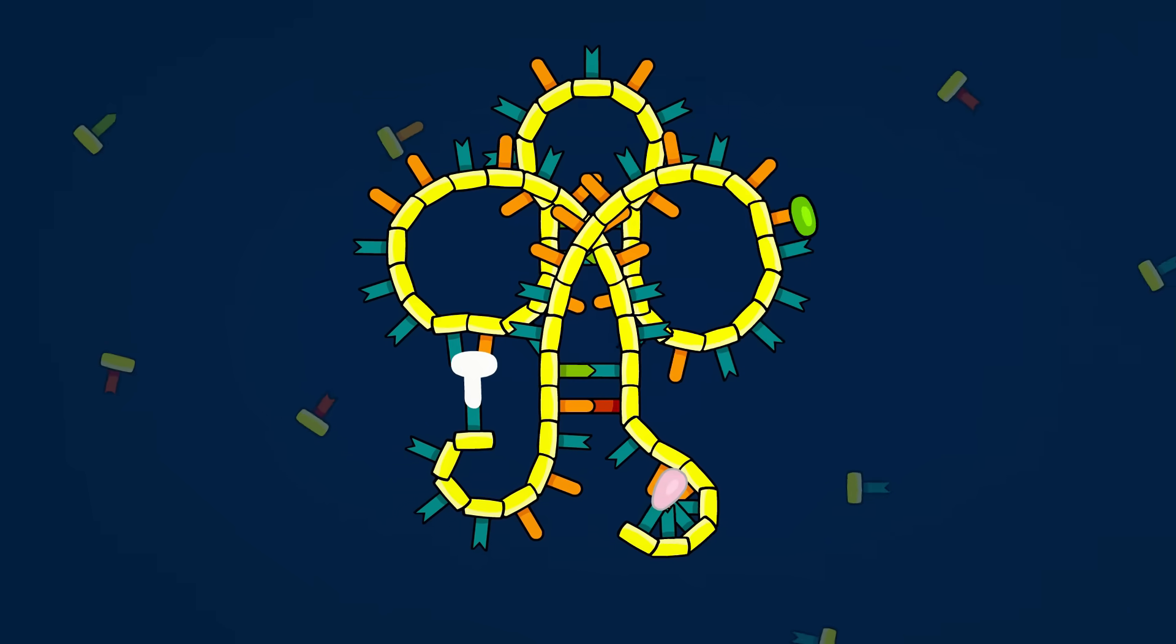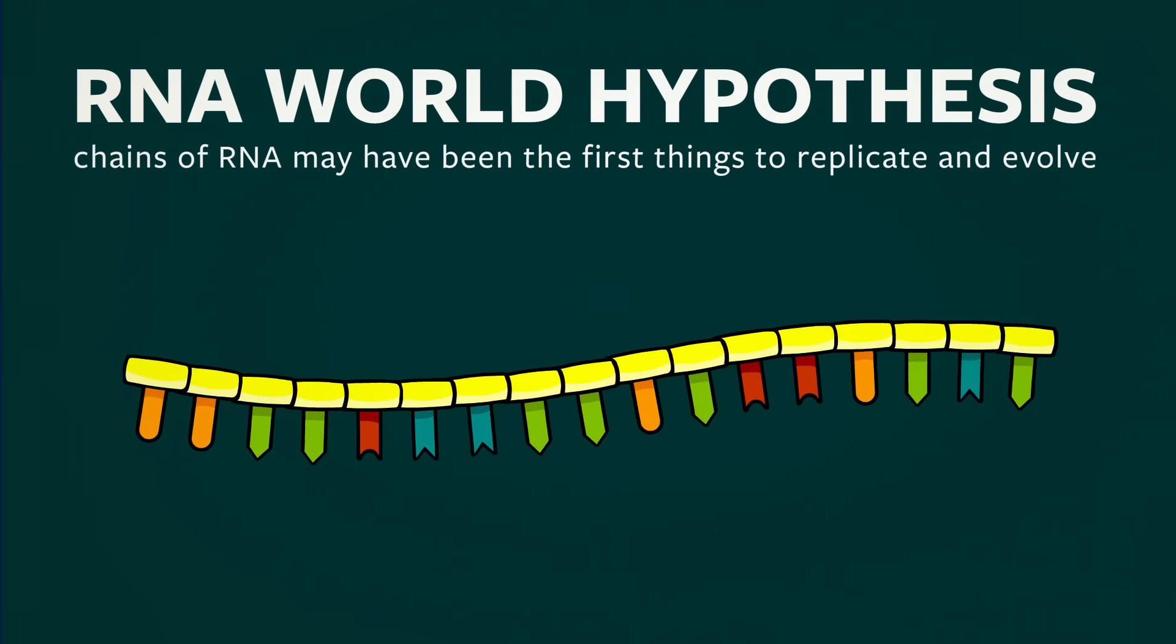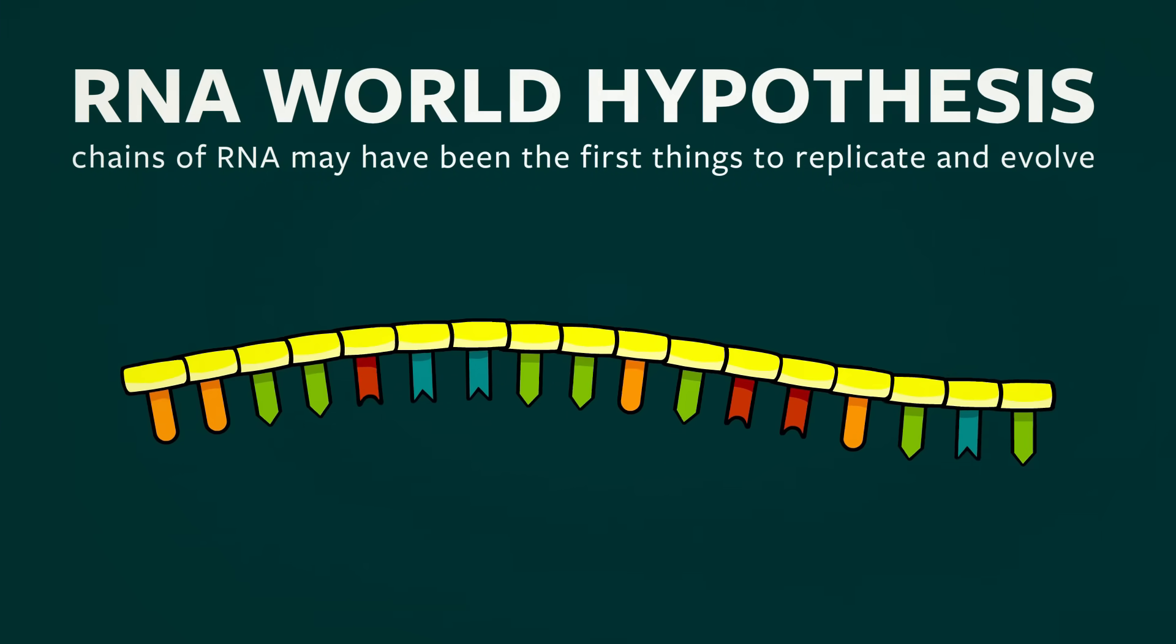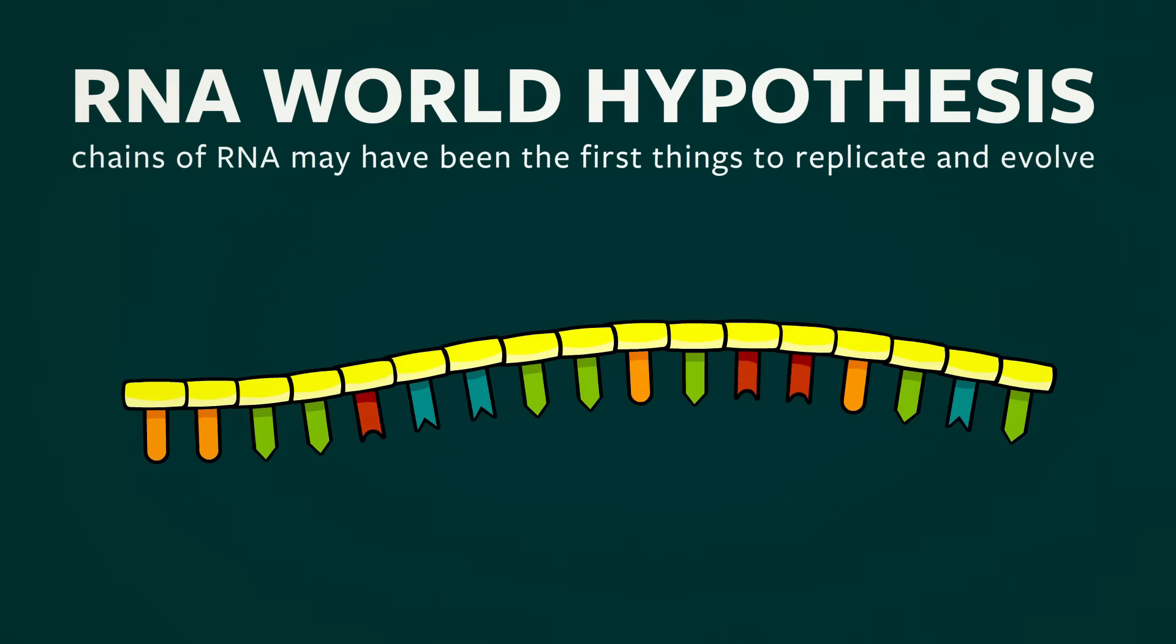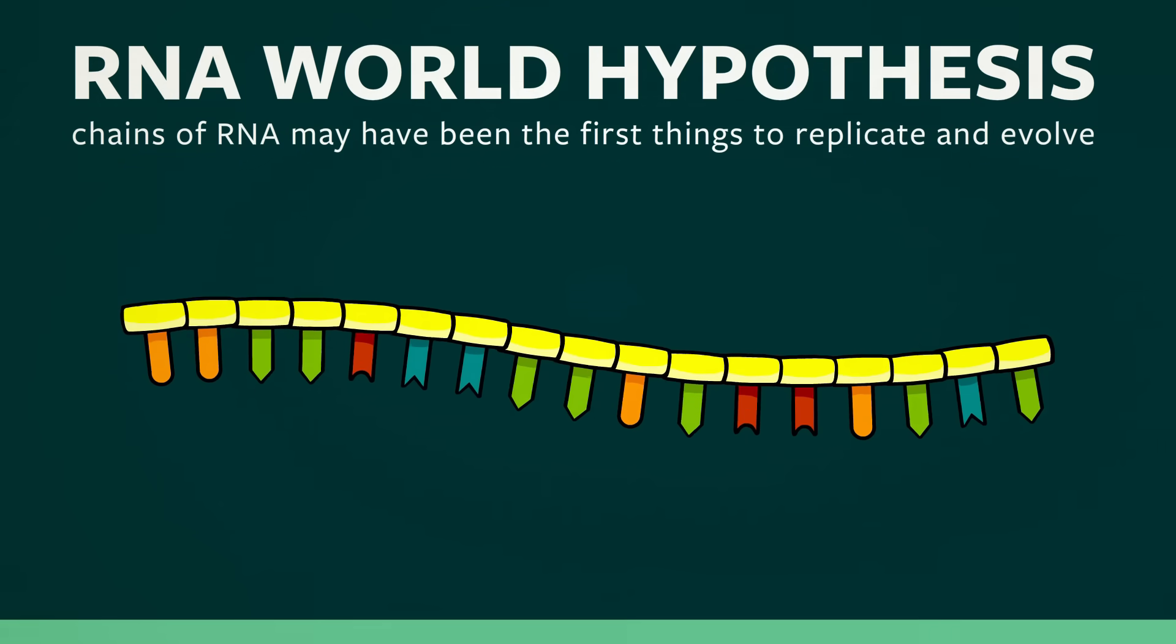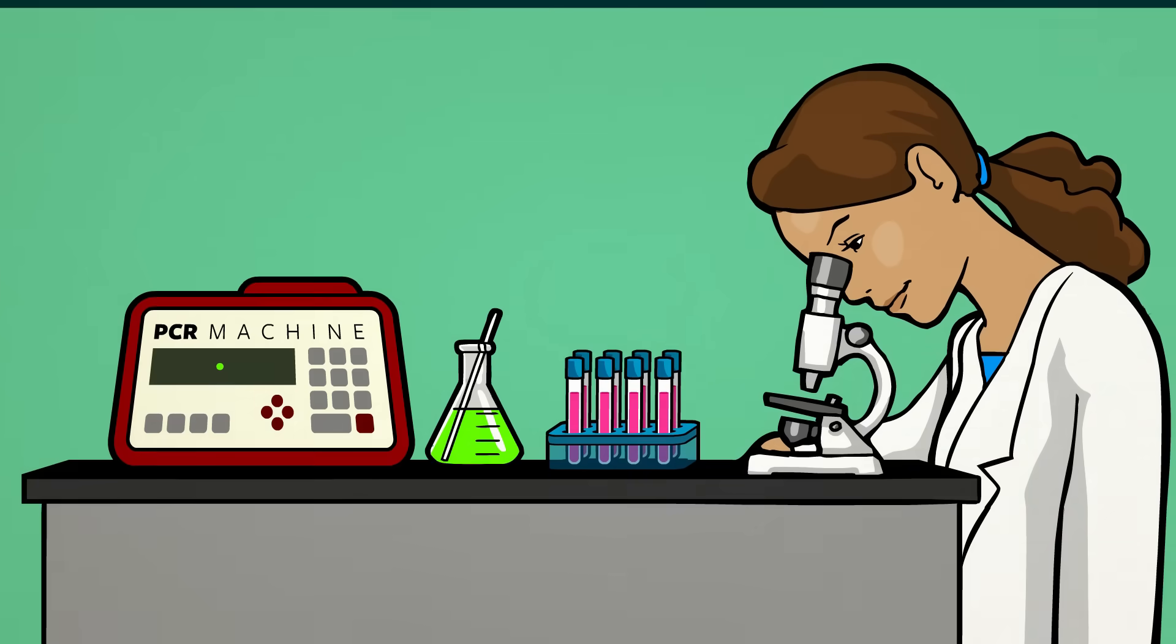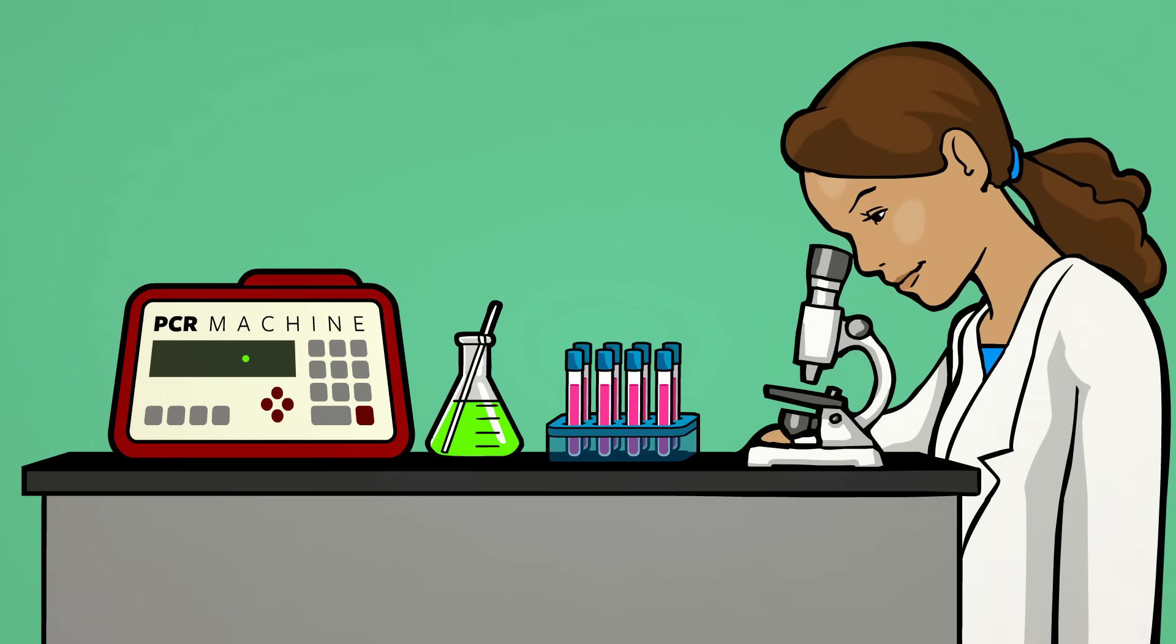So to sum things up, the RNA world hypothesis is the simple idea that the first things to replicate and evolve on our planet may have been chains of RNA or something similar to them. While the basic idea of the RNA world does seem to give us a promising pathway to the origin of life, it's still very much a work in progress.